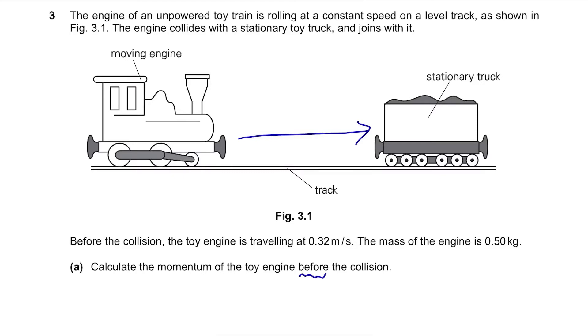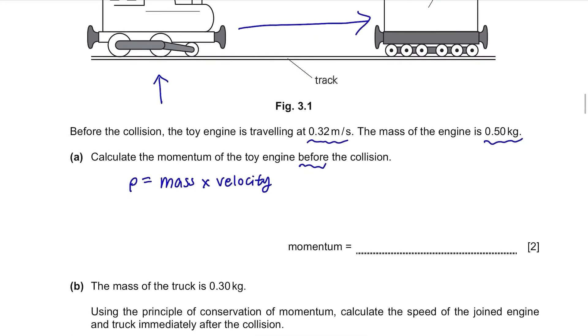It's before the collision so we just need to think about this engine. What is the formula of momentum? It's mass times velocity. Mass is 0.50kg and the velocity is 0.32. So just multiply those two, you will get 0.16kgm per second.